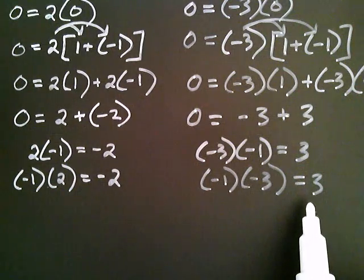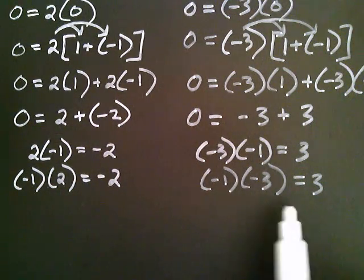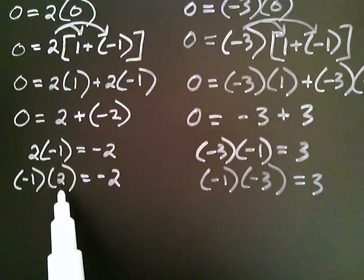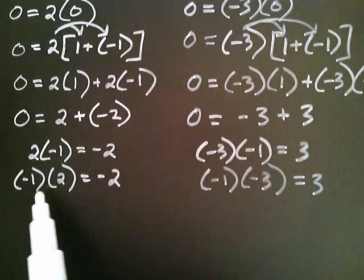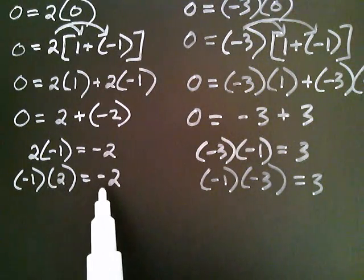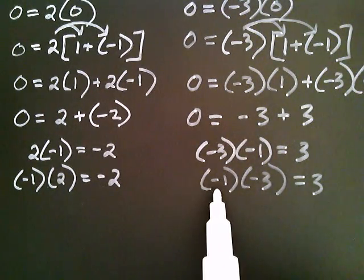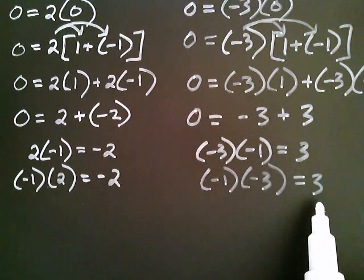That's a very interesting feature of negative one. Whenever you multiply negative one by a number, it causes the sign to change. Negative one times positive two gave negative two, and negative one times negative three gave positive three.